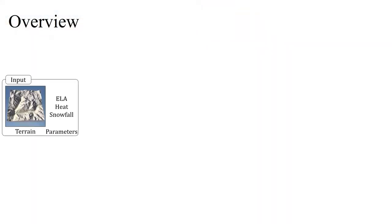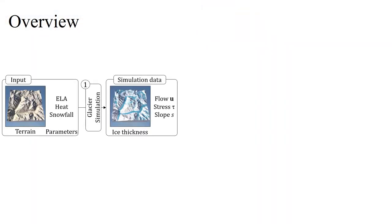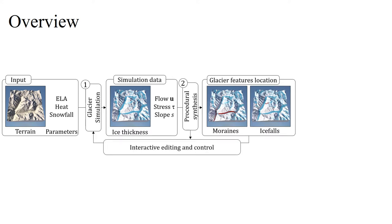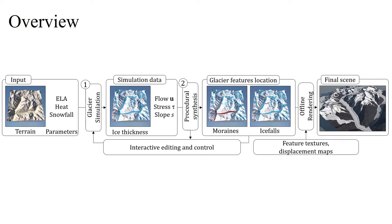We start from a terrain height field and physical parameters. Then we simulate the evolution of the glacier layer and compute location maps for the different features. User control is possible at all stages. Finally, we extract a mesh with detailed features using the location maps with a texture bombing approach.